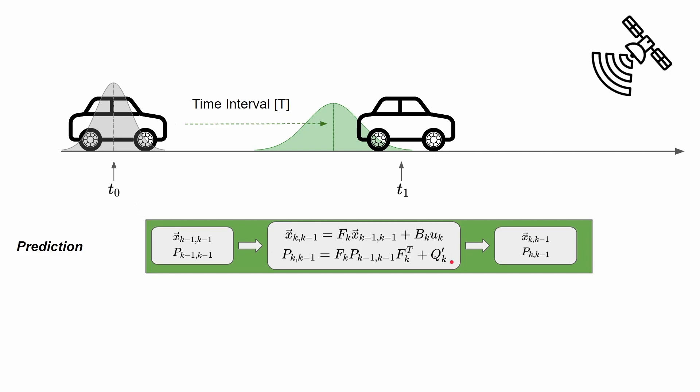The second term is the addition of the process noise covariance. With each model we derive analytically, there is some degree of uncertainty that comes with it, and we model this uncertainty using the Q matrix — the process noise covariance. The purpose of this addition term is that every cycle we execute the prediction step, we need to add more uncertainty to our predicted state, because intuitively when you keep doing prediction after prediction for several cycles, your uncertainty increases every time.